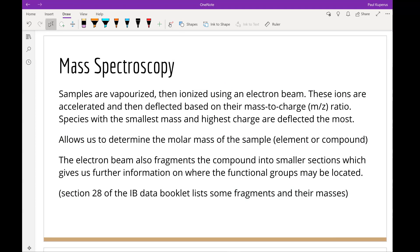Mass spec is the last one we need to know. And in mass spec, what we do is we vaporize a sample. And then we use an electron beam to either turn it into an ion, which will give me the total molar mass of the compound. Or we can also fragment the compound into smaller sections. And this gives us more information on where the functional groups are located. The IB data booklet has a list of their smaller fragments and their masses in section 28.